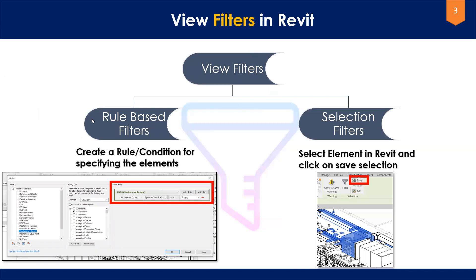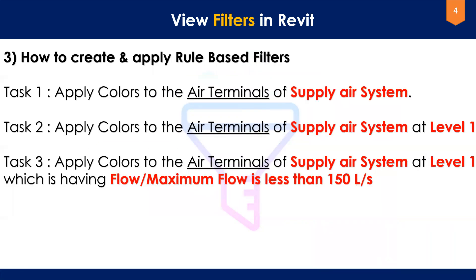There are basically two types of view filters in Revit. The first is rule-based filters, and the second is selection-based filters. In a rule-based filter you create a rule or condition to select and control element visibility. In a selection-based filter you manually select elements in Revit — similar to selection sets in Navisworks — and create a saved set. Those are the two types of view filters.